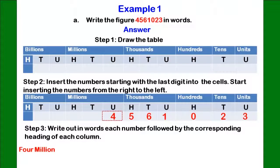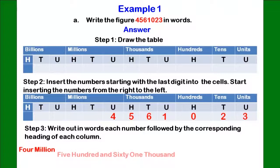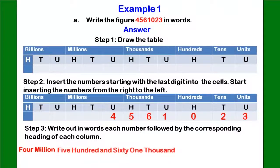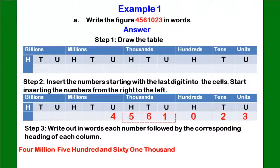You will write 4 million. Then we proceed to the next digit which is 5. This 5 will be the next word to write after 4 million, followed by the column's name which is hundred. This is then followed by the next digit which is 6, and it falls under the column's name tens, but it is pronounced 60.